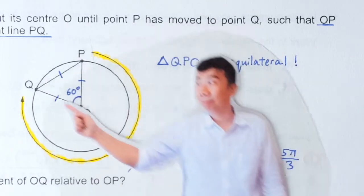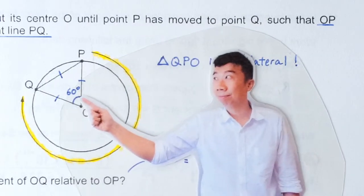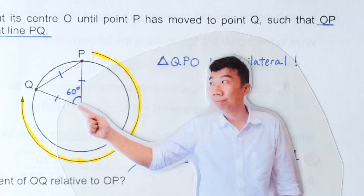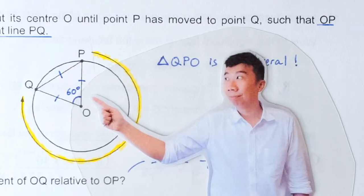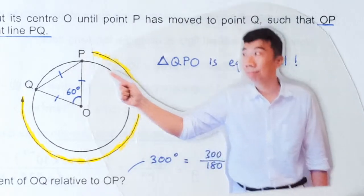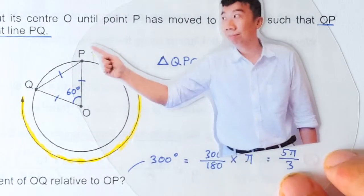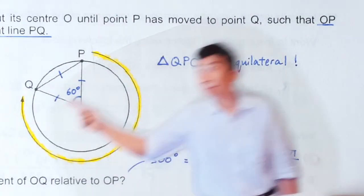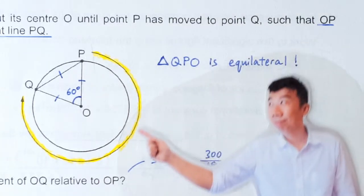This means that this is an equilateral triangle, which means this angle here must be 60 degrees. So what is the angular displacement going from OP to OQ? The question even drew this arrow here for us to remind us that it's a clockwise rotation.